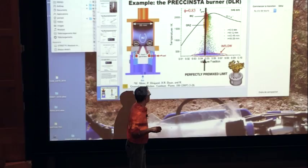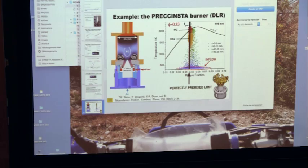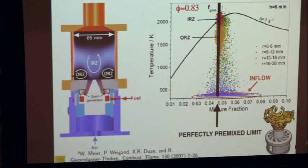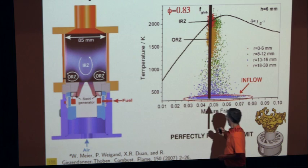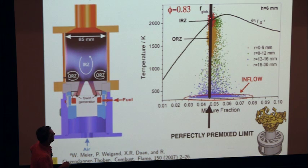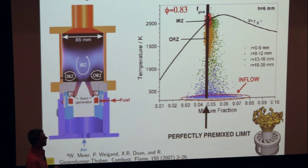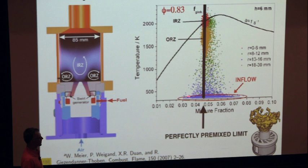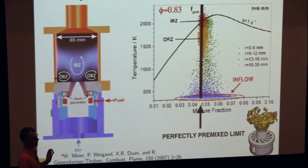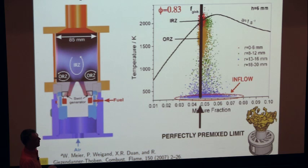A question about data points appearing above the theoretical limit in temperature vs. mixture fraction scatter plots: this is a measurement, so there's no code bug. It is a typical indication of experimental error margins — this is a million-dollar plot requiring CARS to measure temperature and multiple diagnostics for mixture fraction, and these measurements are not exact. So yes, you can be above the theoretical limit. It could be a measurement error, or it could be due to non-equal Lewis numbers — if Lewis numbers are not equal you can be slightly above the theoretical line.